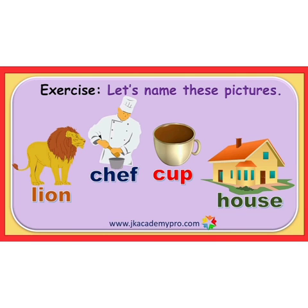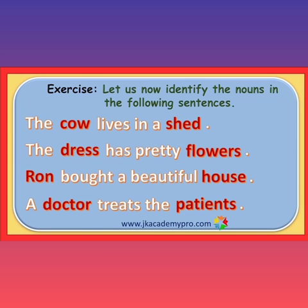Now it's time to do an exercise. Let's name these pictures. Lion — it comes in the animals category, as I told you. Chef — it comes in the persons category. Cup — it comes in the things category. House — it comes in the place category, where we live.